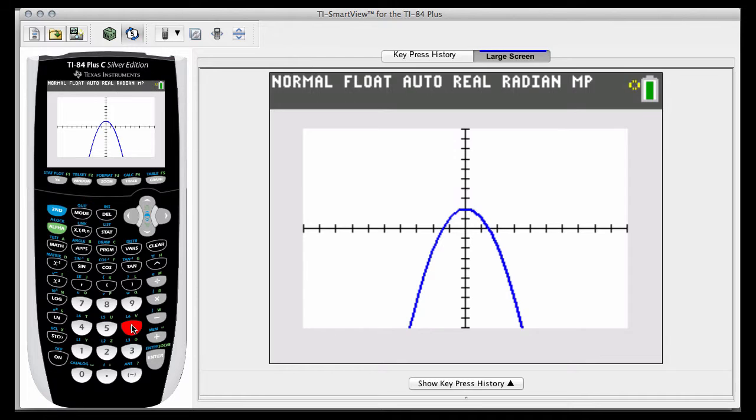And this is really your classic area between two curves problem. Now you'll notice one thing that was not mentioned in the problem are any kind of boundaries or limits of integration. Those we're going to have to get from the graph.